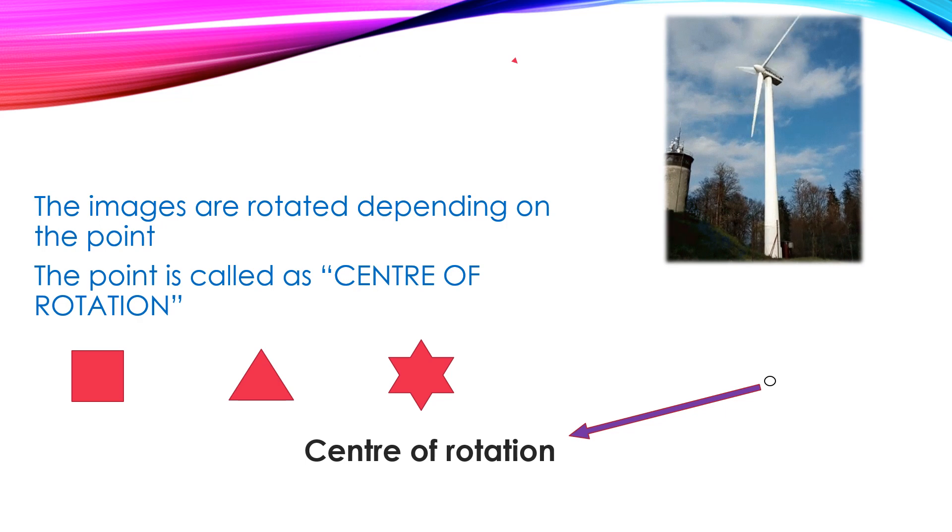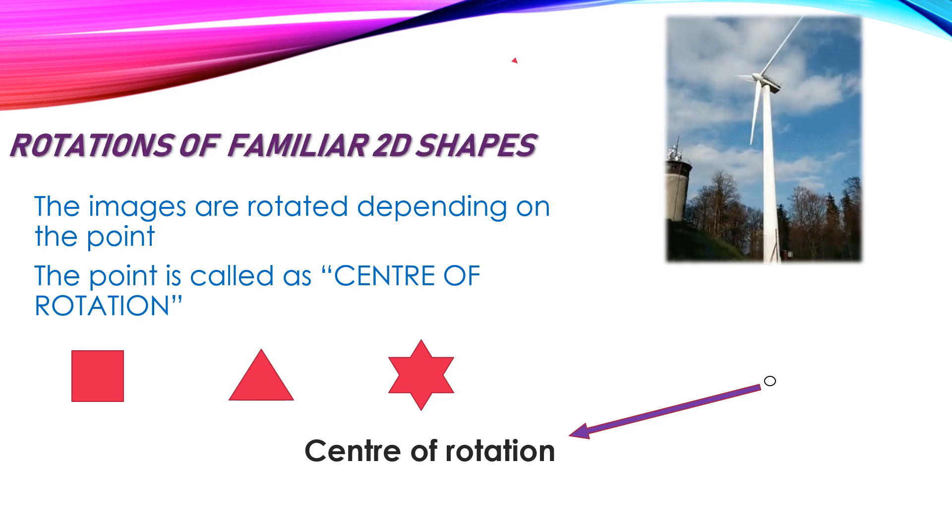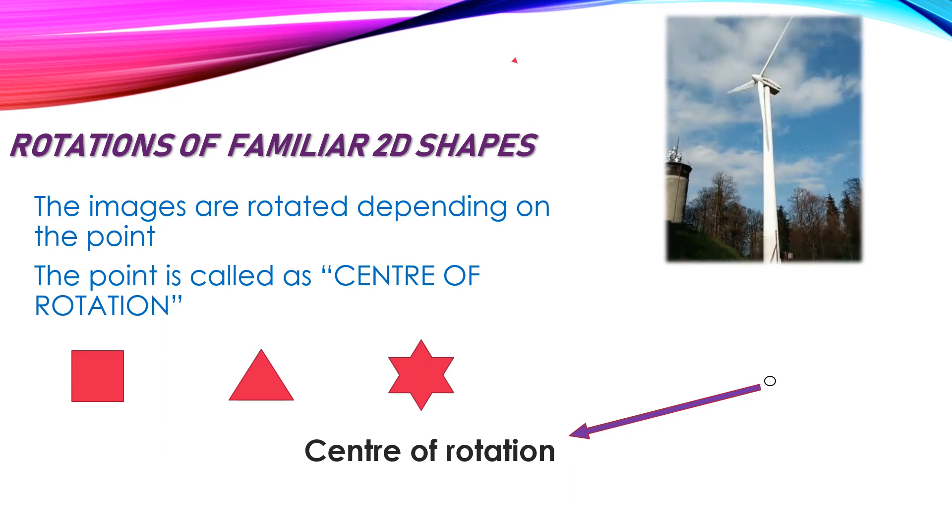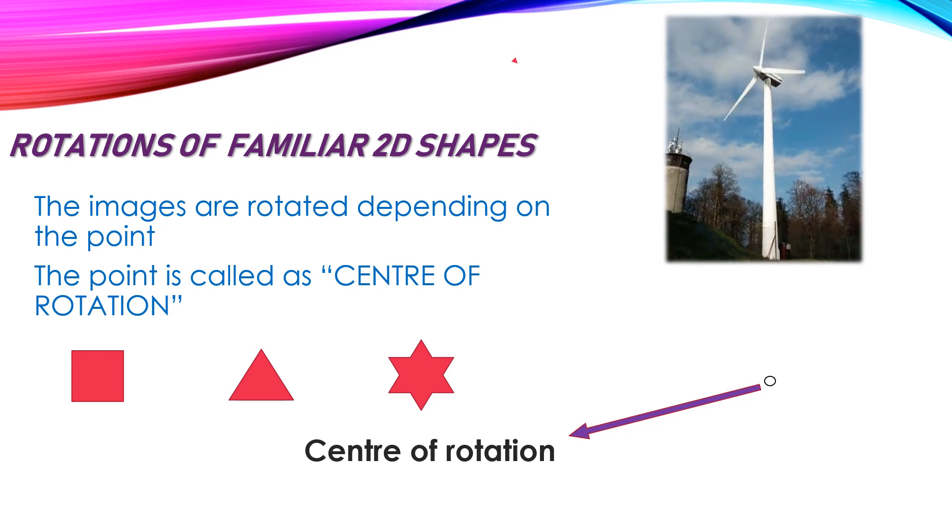It is a flat surface but with length and height. That's why it is a 2D shape. In the 2D shape, we are going to learn about the rotations of familiar 2D shapes. Let us see the definition first. The images are rotated depending on the point. That point is called as center of rotation. Images are rotated in the center point. Look at this windmill. Look at the center tip. With that center tip only, the three fans are rotating.